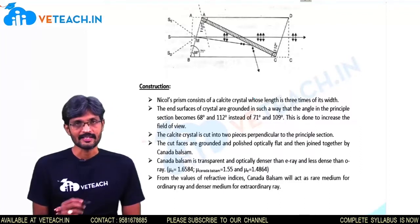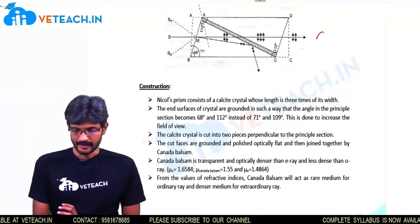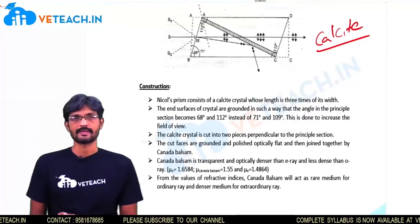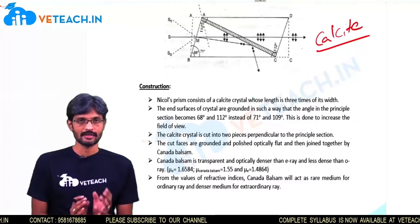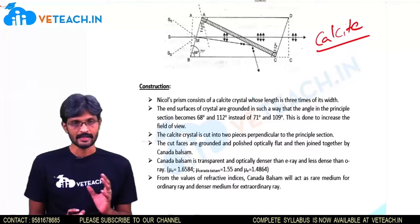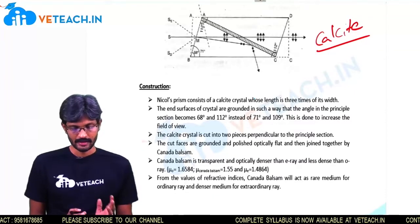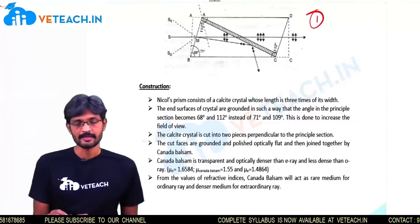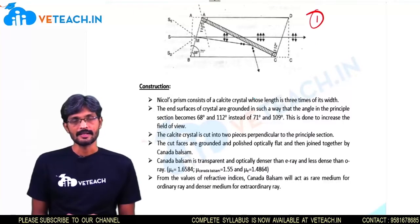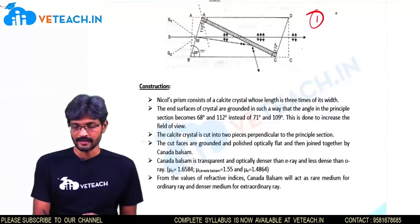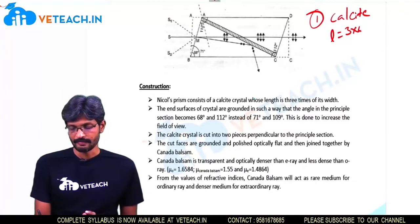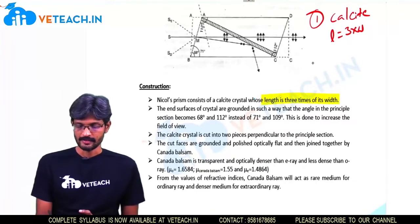Nicol constructed the Nicol Prism by taking a calcite crystal. In order to understand this construction, we can break it into steps. Step one: Nicol took a calcite crystal whose length is three times its width.